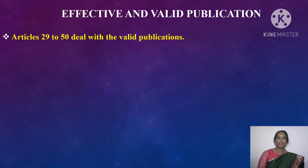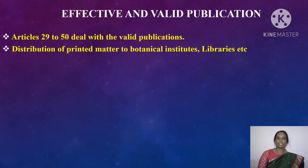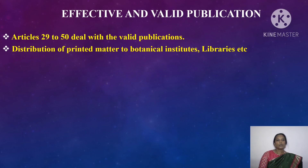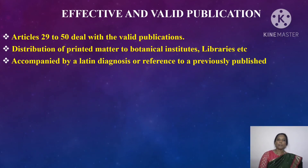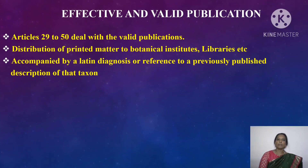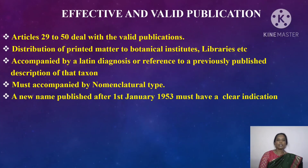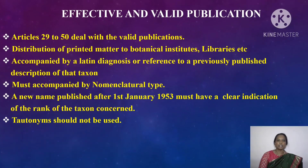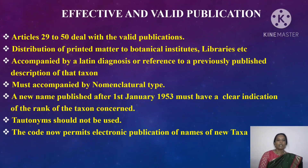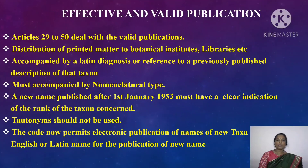Effective and Valid Publication. Articles 29 to 50 deal with valid publications. A publication is considered valid only when it satisfies the following conditions: it must be distributed in printed form to botanical institutes, libraries, etc.; it must be accompanied by a Latin diagnosis or reference to a previously published description of the taxon; it must be accompanied by a nomenclature type; and a new name published after 1st January 1953 must clearly indicate the rank of the taxon concerned. The code now also permits electronic publication of names of new taxa and use of English or Latin for the description.